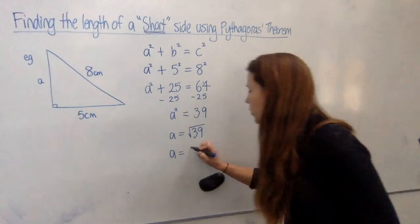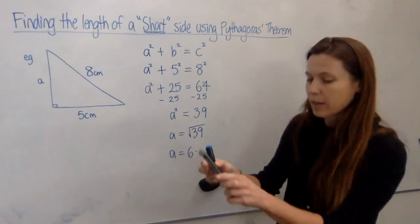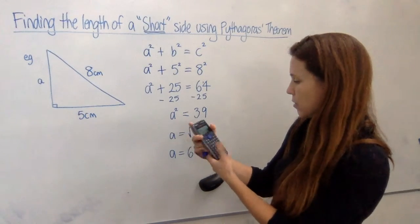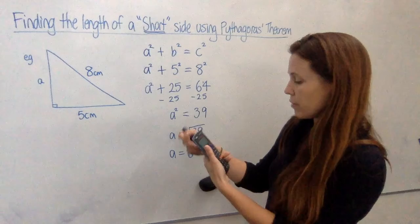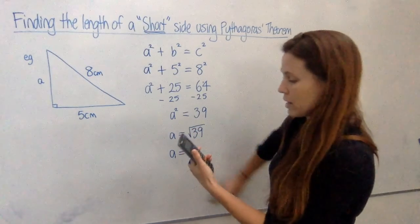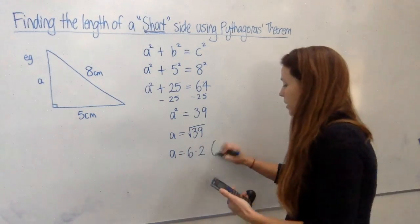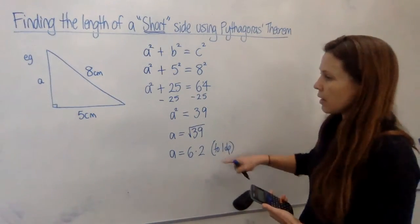So it's going to be six point something. Now if you'd like to know what it is exactly, you need to grab your calculator at this point and just type in square root of 39 equals, and we've got a choice there. We'll need to round it off to some level. Let's just go to one decimal place. We'll say it's 6.2.